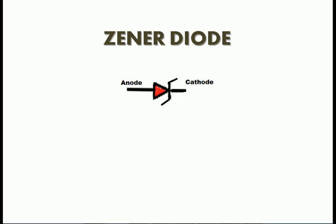Our topic is the Zener diode. This is the symbol of the Zener diode, with an anode terminal and a cathode terminal. The Zener diode is a special type of PN junction semiconductor diode. Its construction is similar to that of a conventional PN junction diode. The main difference is that Zener diodes are heavily doped and optimized to operate in the breakdown region. By varying the doping level, manufacturers can produce Zener diodes with breakdown voltages from 3 volts to 200 volts.